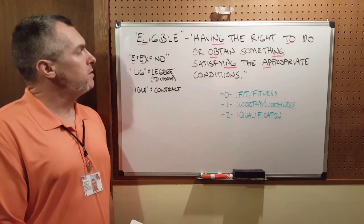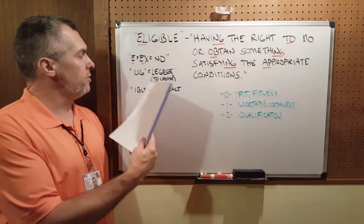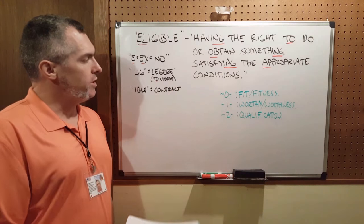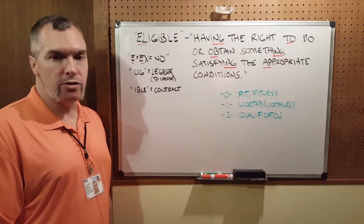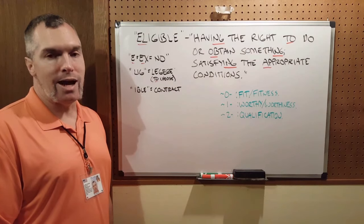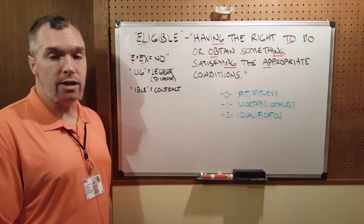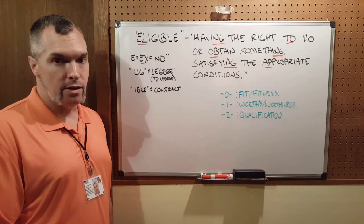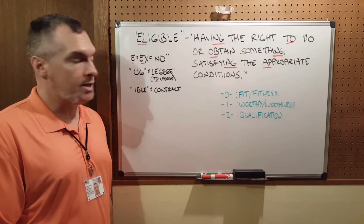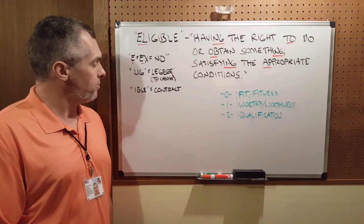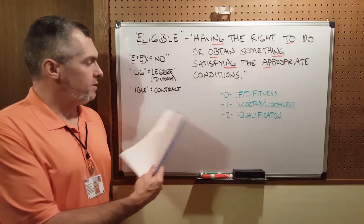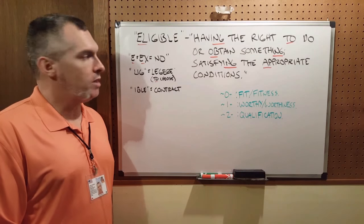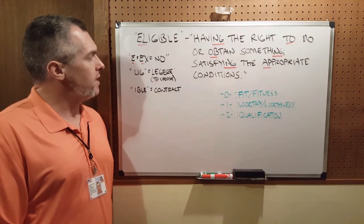The next particle of the word is L-I-G, which comes from L-E-G-E-R-E, meaning 'to choose'. Then the I-B-L-E at the end is contract — I've done a video on that and I'll put a link up there. That just means a condition of, a quality of, a state of.